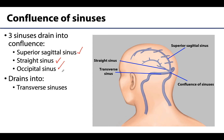The confluence will continue drainage as the paired transverse sinuses — extending both right and left from the confluence.